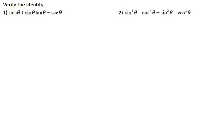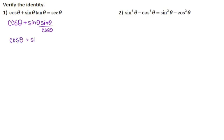Cosine and sine are your basic trig functions so we're not going to change those, but I can change tangent to sine over cosine so I'm going to start there. So I'm going to write this as cosine of theta plus sine of theta, and then tangent is sine of theta over cosine of theta. And again my goal is to get this to equal secant of theta. I'm going to go ahead and combine sine times sine so I have cosine of theta plus sine squared theta all over cosine.